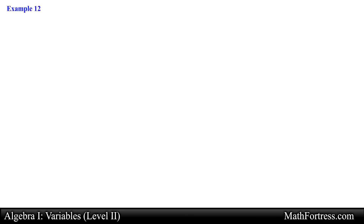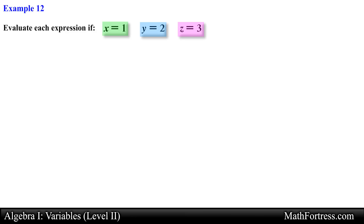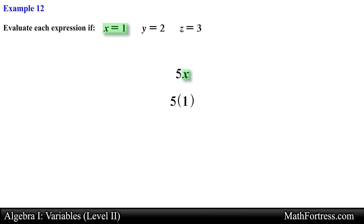Now let's practice evaluating expressions. Evaluate each expression if x equals 1, y equals 2, and z equals 3. We have three different variables each with a corresponding value. The goal is to substitute those values into the following expressions. The first expression is 5x. The variable here is x, so we substitute x with 1 — always using parentheses when substituting. So 5 times 1 simplifies to 5.